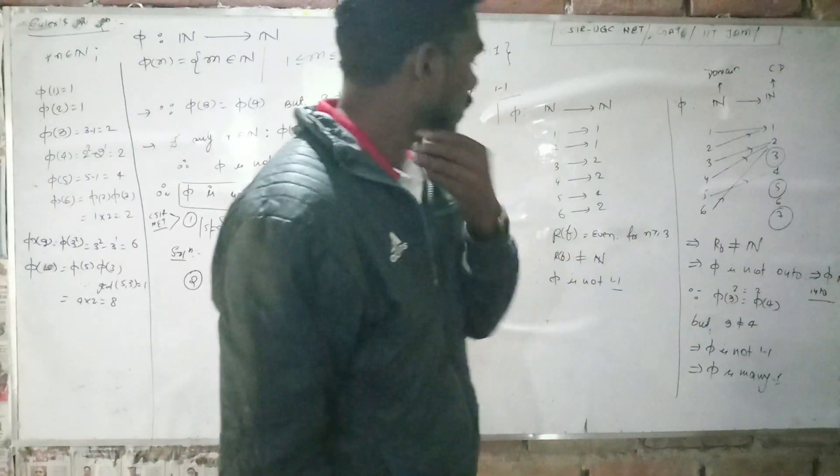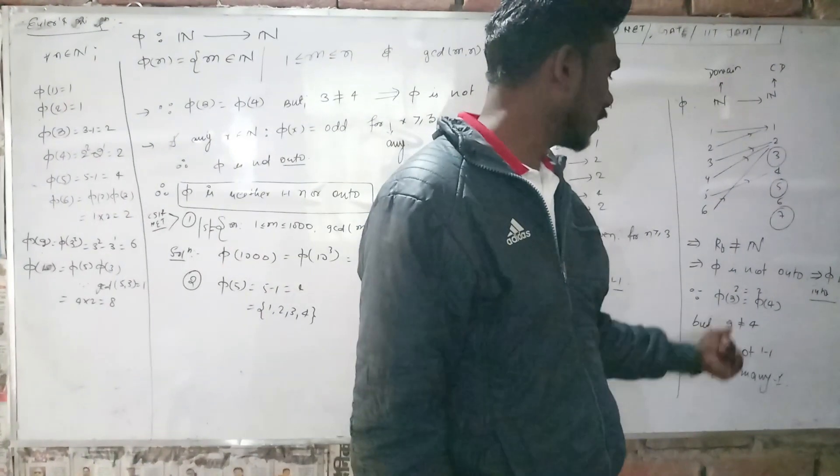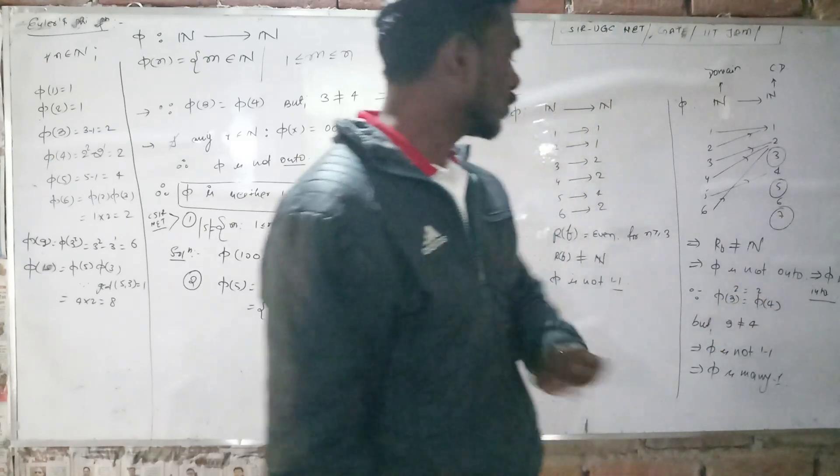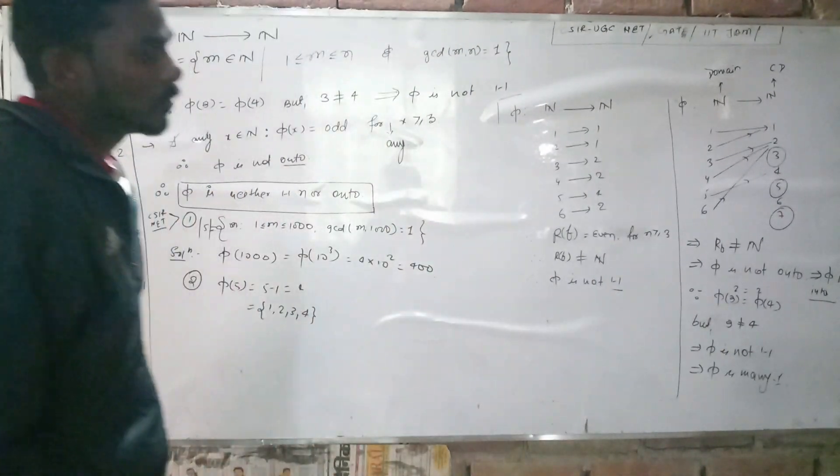What about the one-to-one property? Since phi(3) = phi(4) = 2, but 3 does not equal 4, the function is not one-to-one.